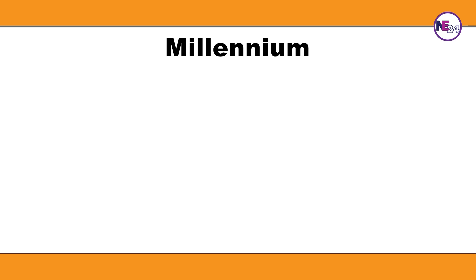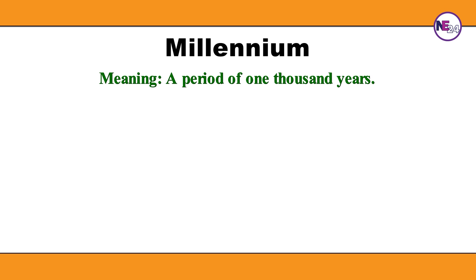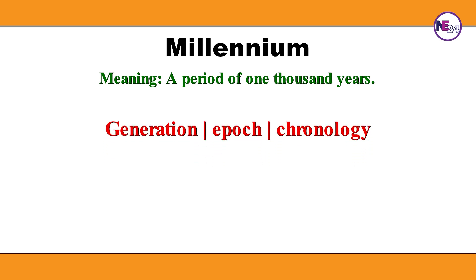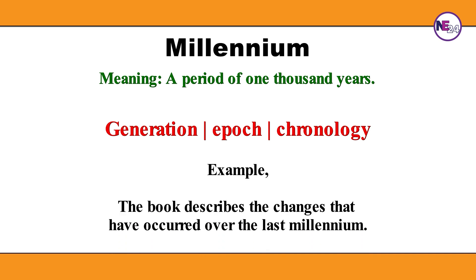Millennium. A period of 1,000 years. Synonyms: Generation, Epoch, Chronology. Example: The book describes the changes that have occurred over the last millennium.